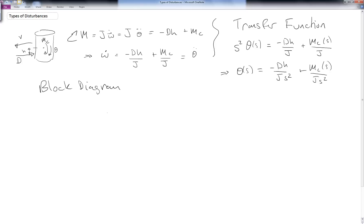So we would say, alright, I've got 1 over j s squared, and if that block is here then the thing coming out of that is going to be theta of s, and the thing that goes into that would be the sum of minus d times h and mc. So I would have an add and have d times h, put a minus sign there, and then also have mc there, and this is of s.